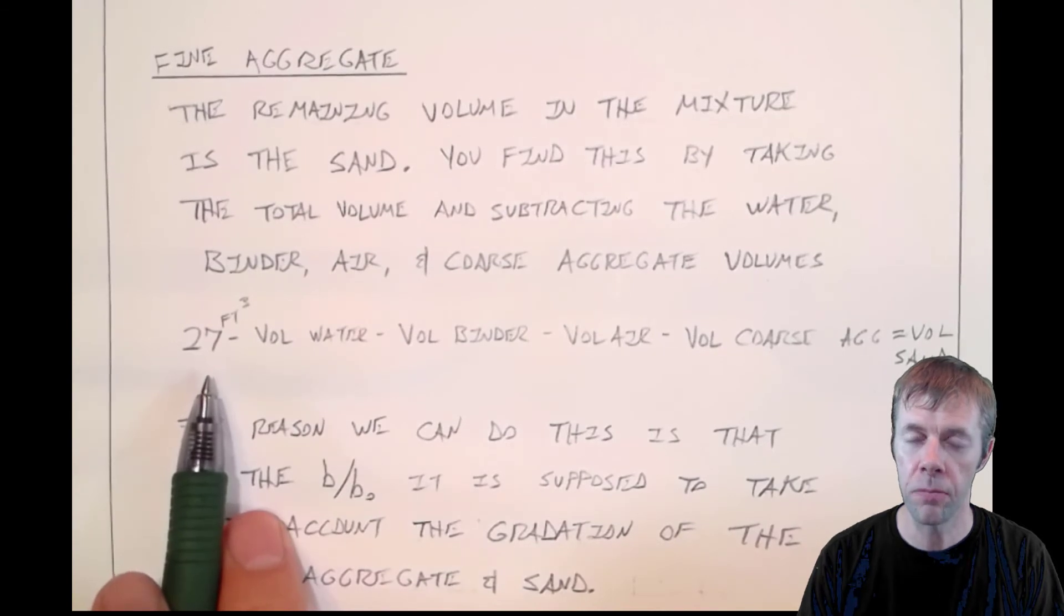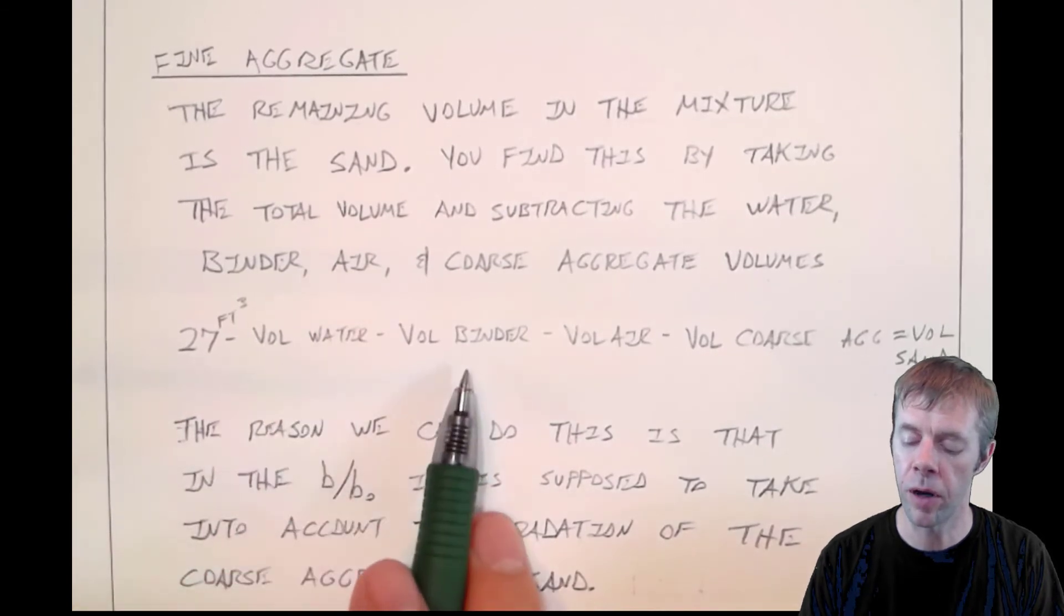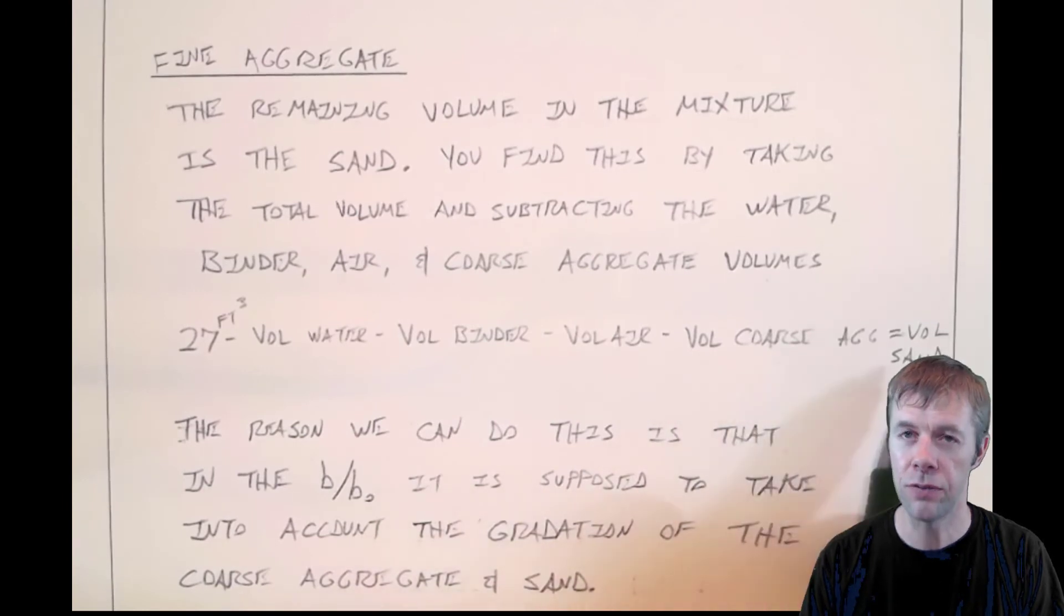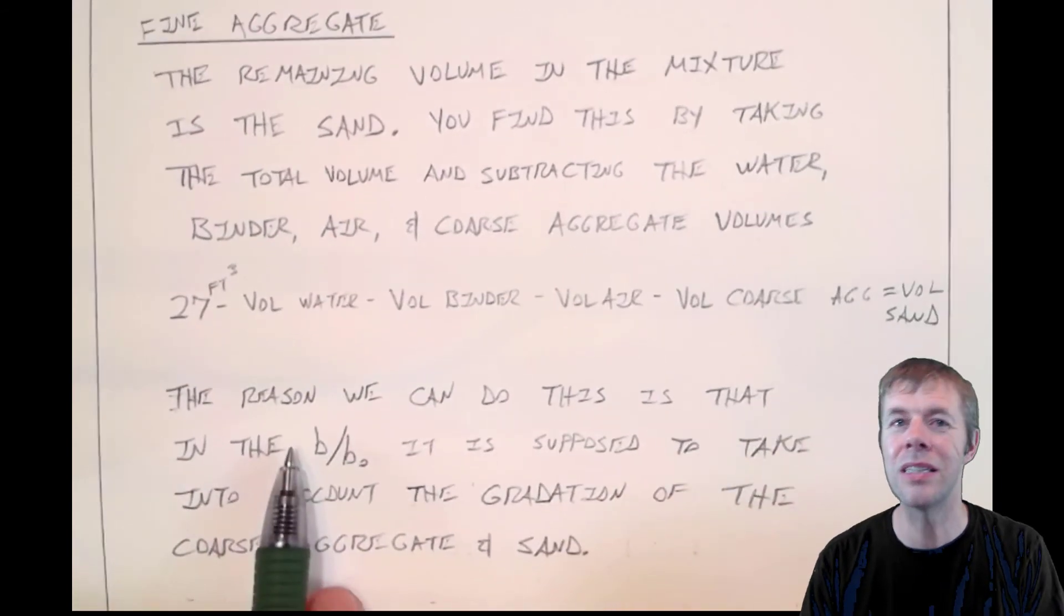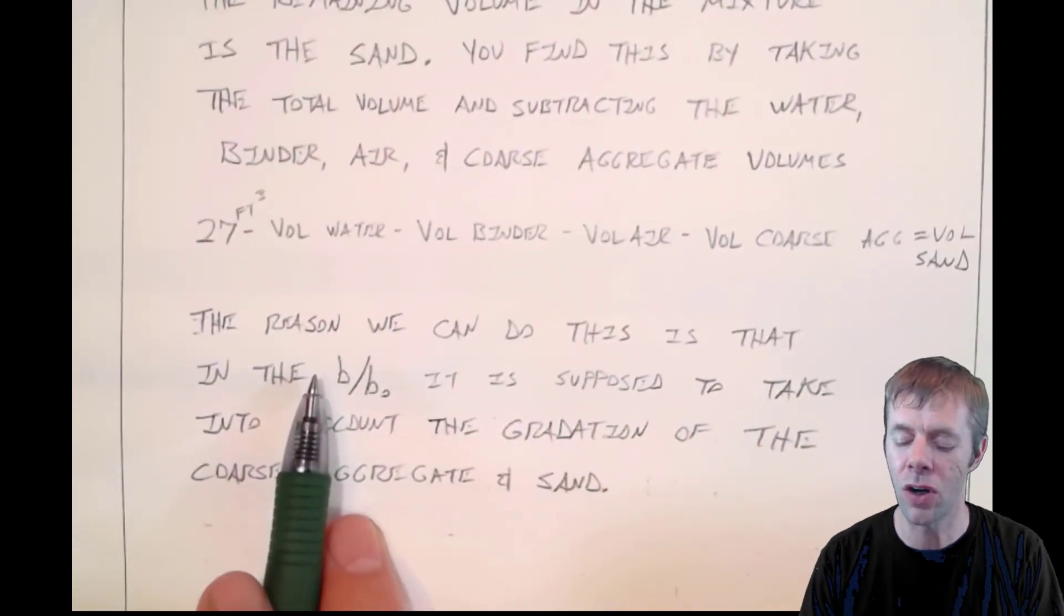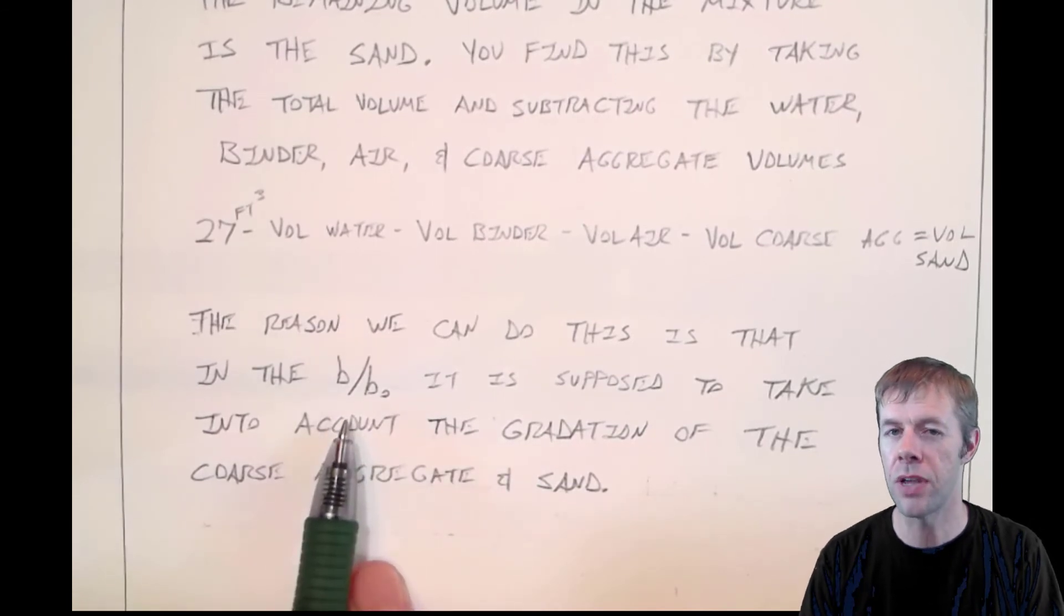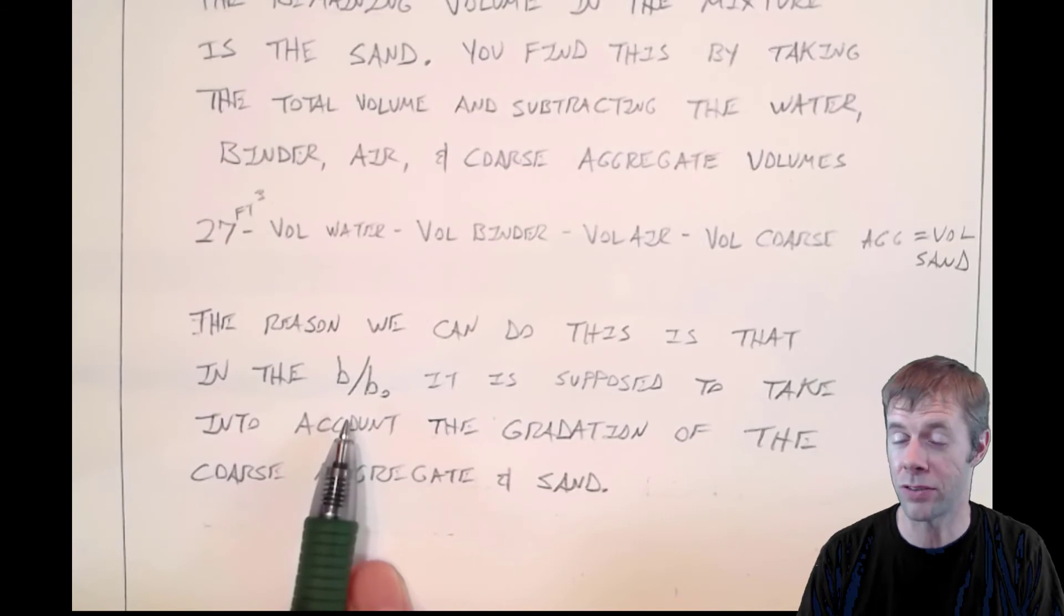27 cubic feet minus the volume of water, the volume of the binder, the volume of the air, minus the volume of the coarse aggregate. That gives you the remainder leftover volume of the sand. Now, they use this concept because they say they've already taken into account the gradation of the sand in the B over B naught calculation, so whatever's left has to be sand.